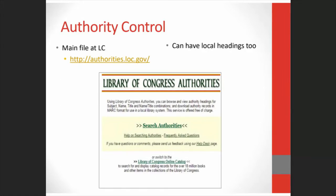You can also have local authority records — if you have special items in your collection by an author that no one else has established a heading for, you can create an authority record in your catalog, which will collate items by that author.